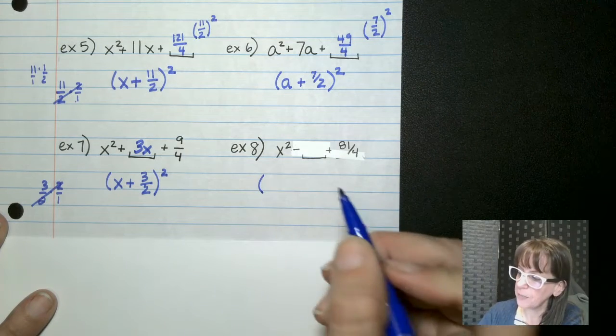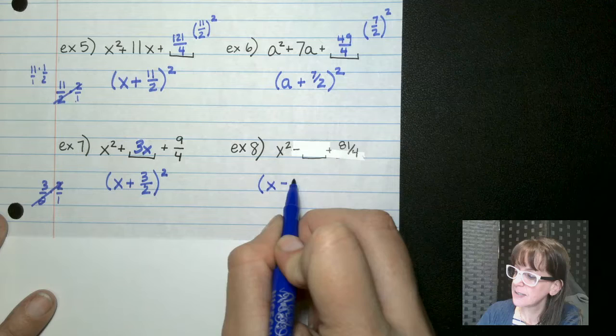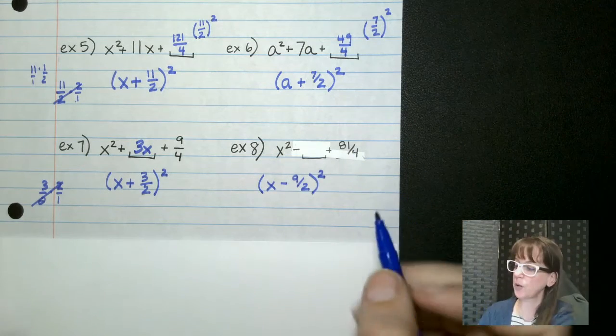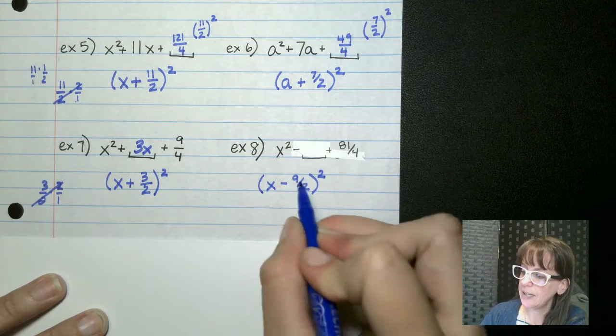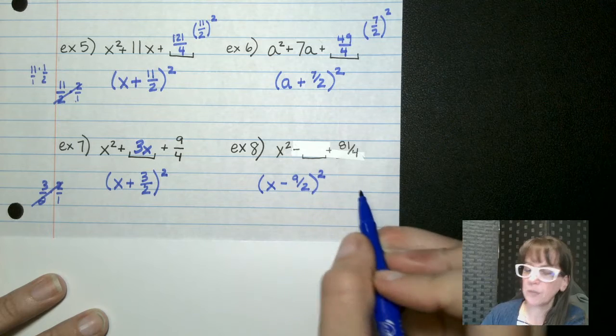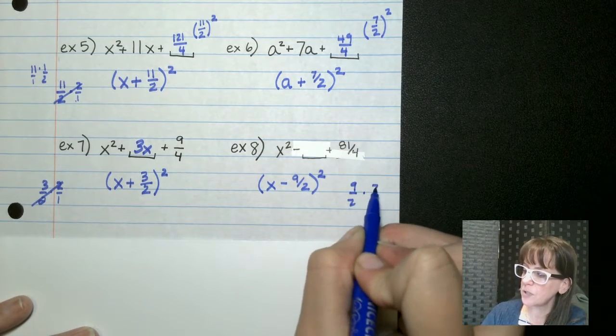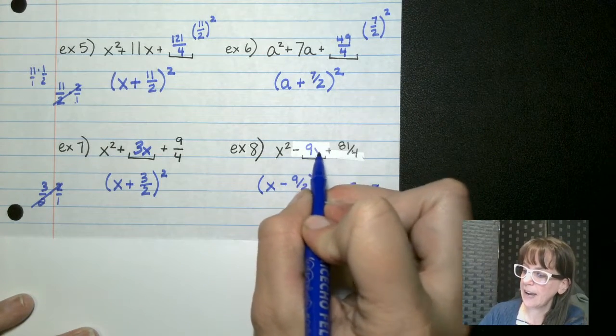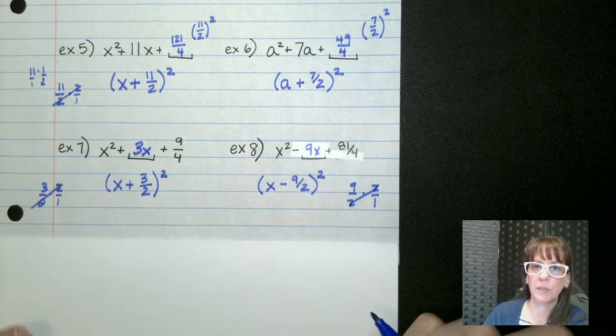Now over here, we have x minus 9 halves squared, because that's the square root of 81 and the square root of 4. Now we've got to take negative 9 halves. We multiply those together. We get 9 halves. Double it. So 9 halves times 2 over 1 would give us 9x. And so our linear term would need to be 9x for this to be a perfect square trinomial.